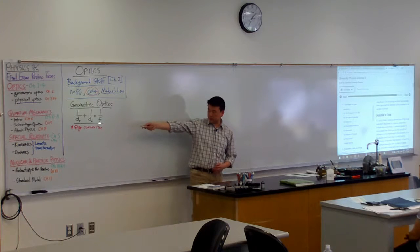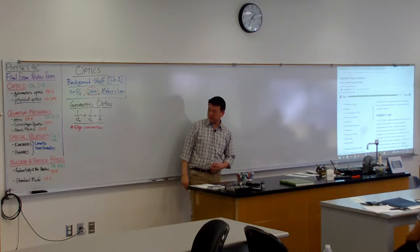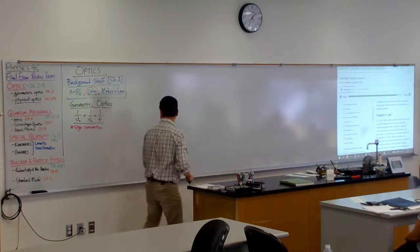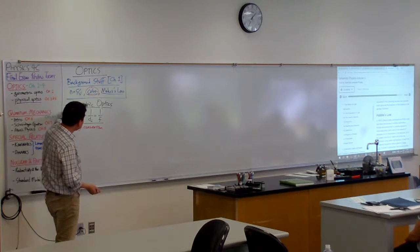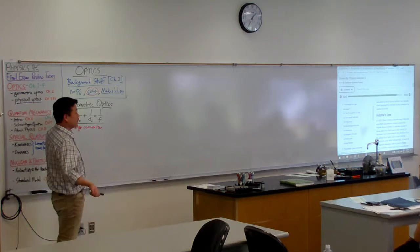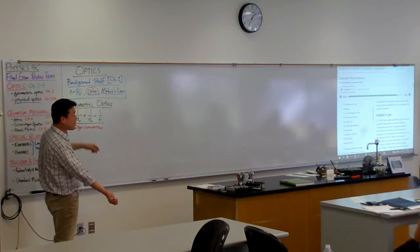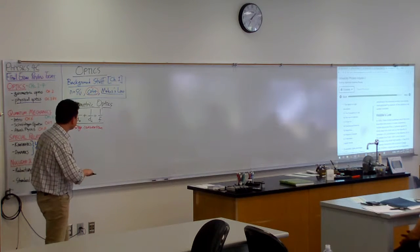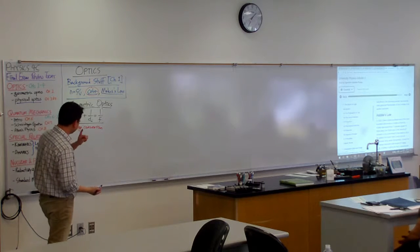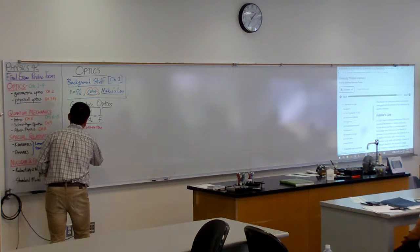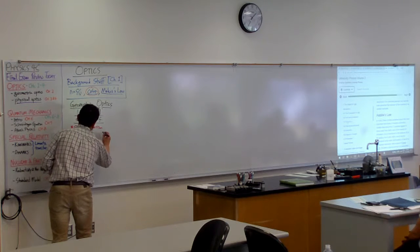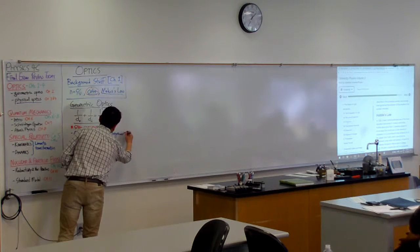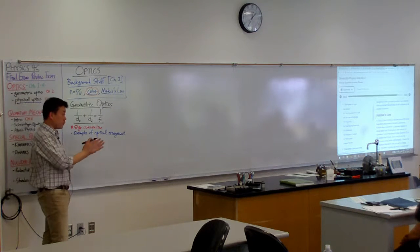So you have the thin lens equation, the most important thing tied to the sign convention, and really just having memorized this won't really do you much good. You can write down the equation, it'll give you two out of five points in the part where it was needed, but it won't really get you where you want to be. So really what I want to remind you of is the examples of optical arrangement. And that's the forward and backward part. You should know what was involved in solving for it.